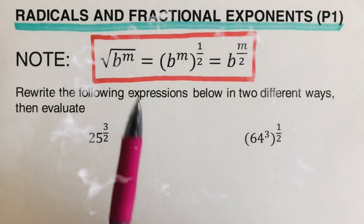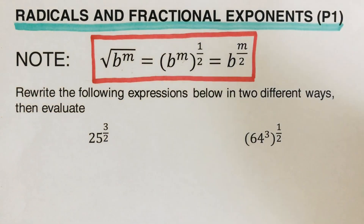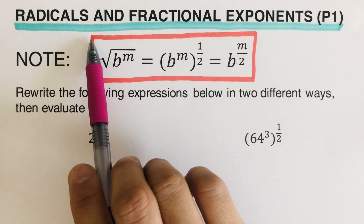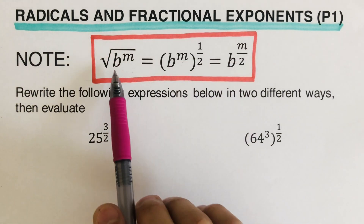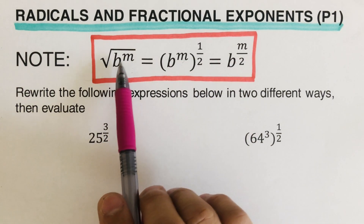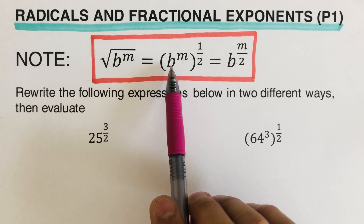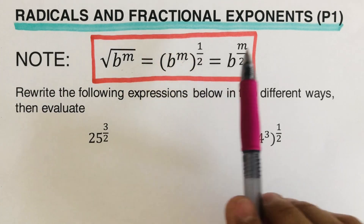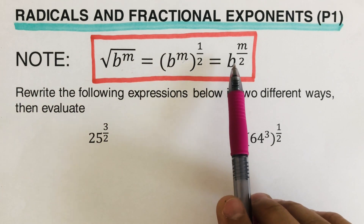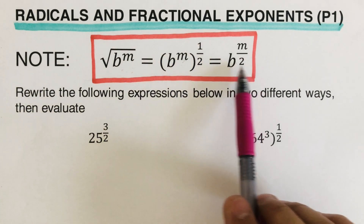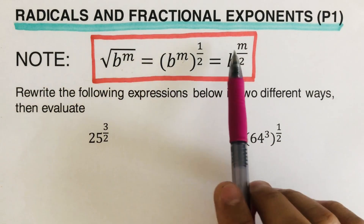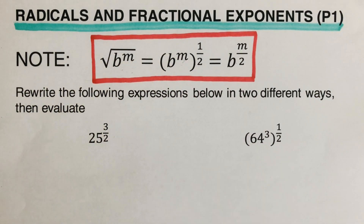Hello everyone, today we're going to cover radicals and fractional exponents — this is part one. The core rule is: the square root of b to the power m equals b to the power m raised to the power one-half, which also equals b to the power m over two. These three expressions are equivalent, meaning they give the same answer.